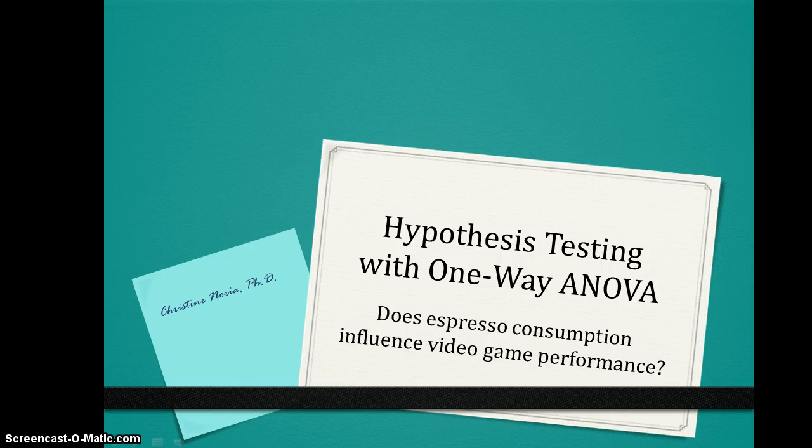This example walks you through, step by step, how to conduct hypothesis testing with a one-way analysis of variance. There are a couple of documents that you can use on Moodle to help you with your calculations if you wish. I will be suggesting that you pause and attempt it on your own as you go through this process. This also corresponds to work we're doing in Chapter 12 in your textbook. Our main research question is: does espresso consumption influence video game performance?